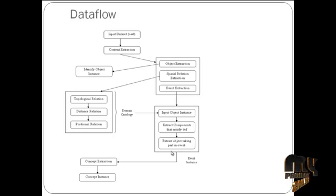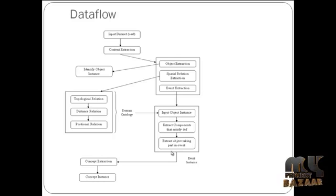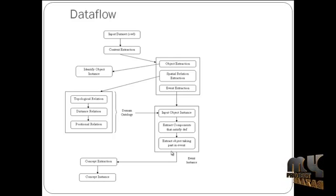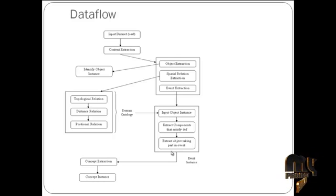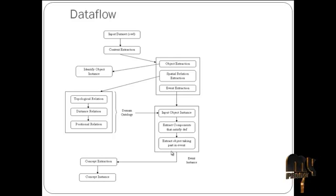The three spatial relations are categorized into: topological relation, distance relation, and portion relation. Topological relation refers to the structure of the data. Distance relation is used to find the distance between the relations. Portion relation refers to the x-y axis. After that we find out the event extraction.